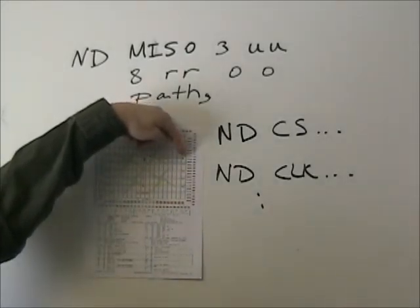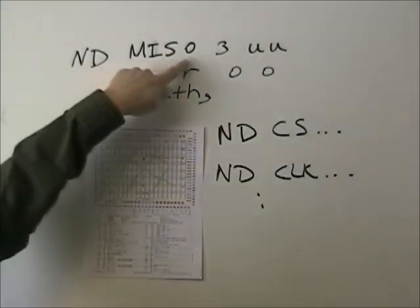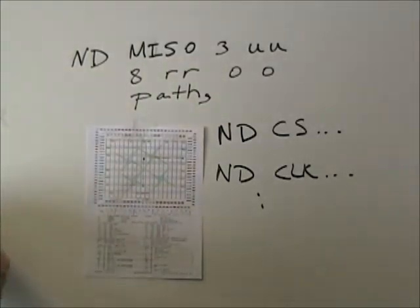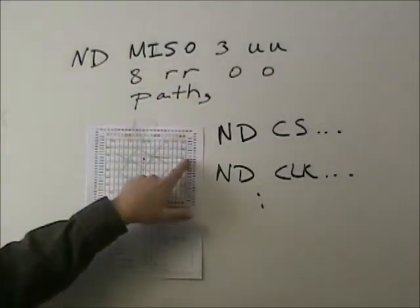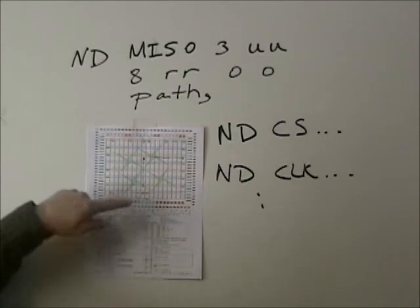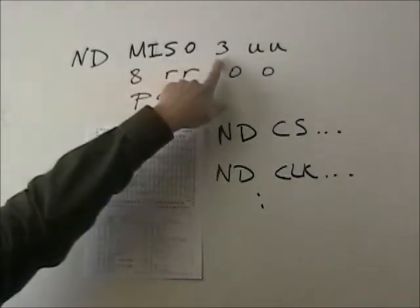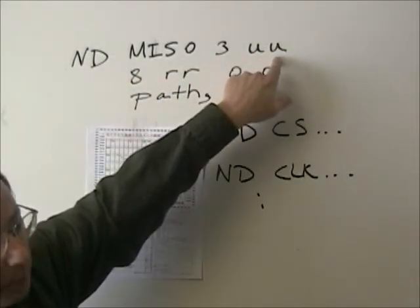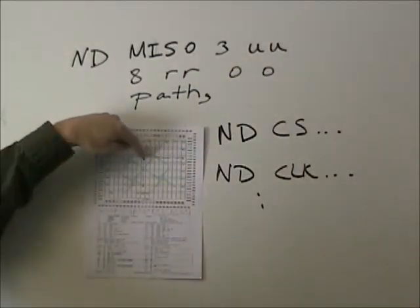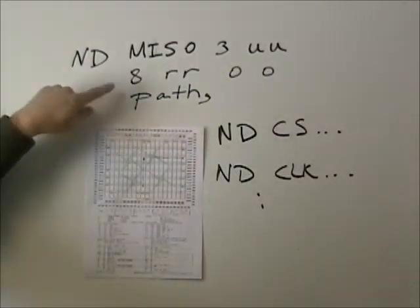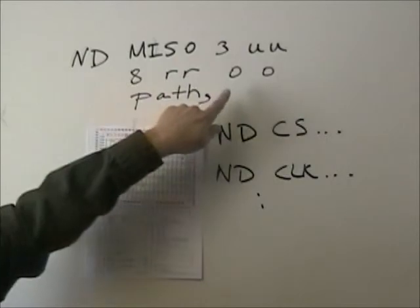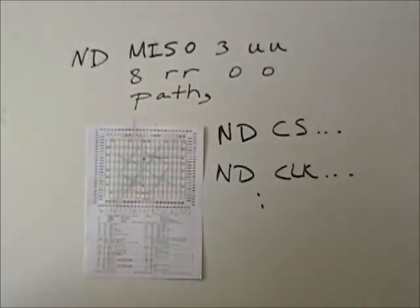In this example, we have the master in slave out line on our SPI interface connected to node 517. When we start counting, we start with zero: zero, one, two, three. So we're taking three steps in the up direction, and then we're taking eight steps in the right direction, and there's no third set of steps. We have zero, zero as a terminator.